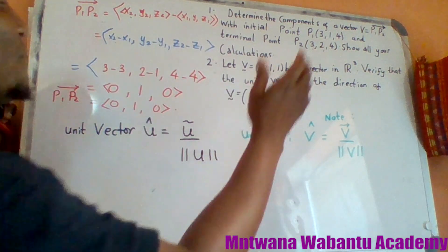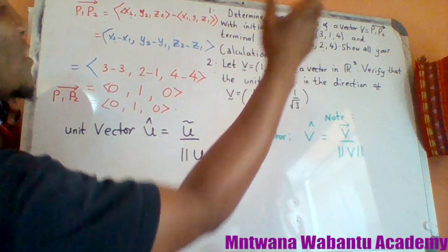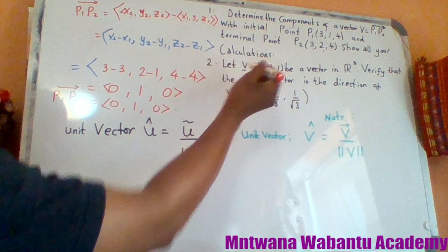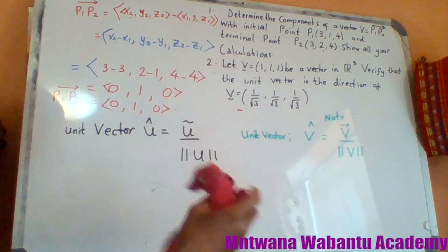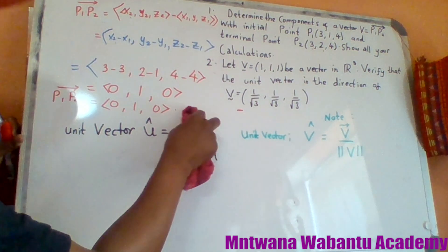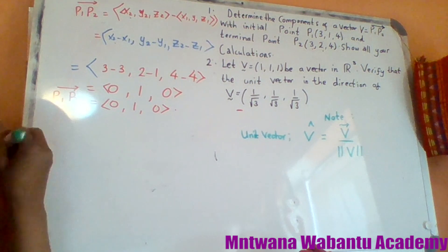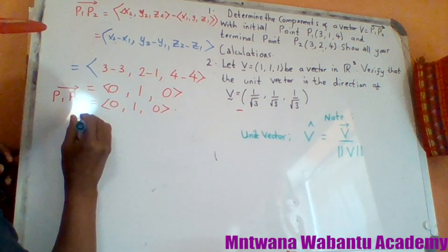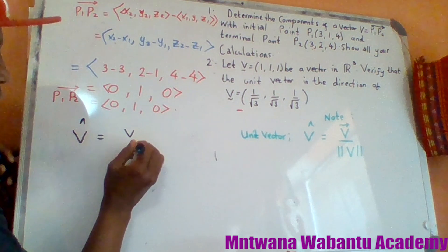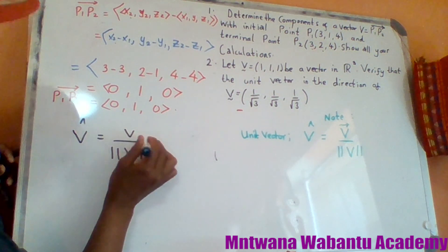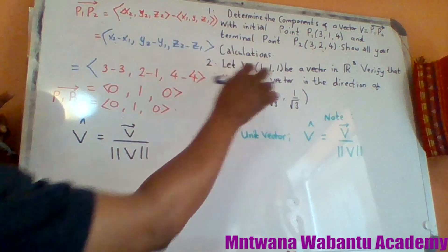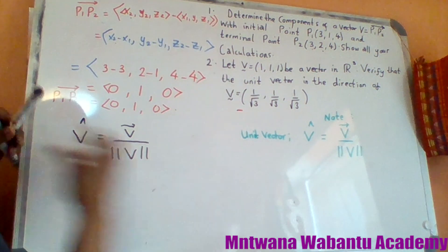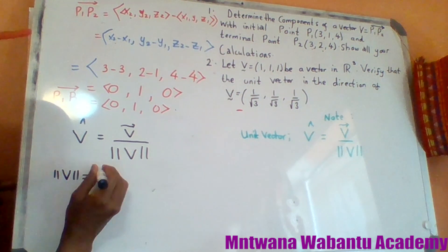For this problem, we are given vector v in 3D space. We need to find the unit vector v-hat and verify it. Since we're working with v, the formula is: unit vector v equals vector v divided by the magnitude of vector v. Vector v is given as (1, 1, 1), so we need to find its magnitude.